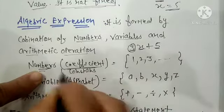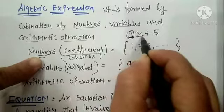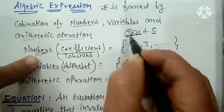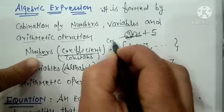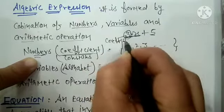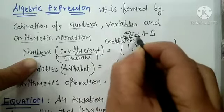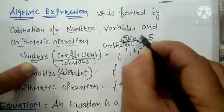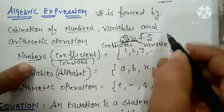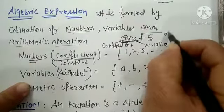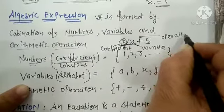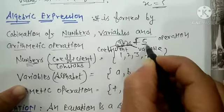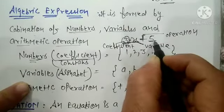An algebraic expression has a coefficient. When a number is used with a variable in multiplication, that number is called the coefficient. The letter is called the variable. The plus sign between terms is the mathematical operation. And the standalone number is called the constant.